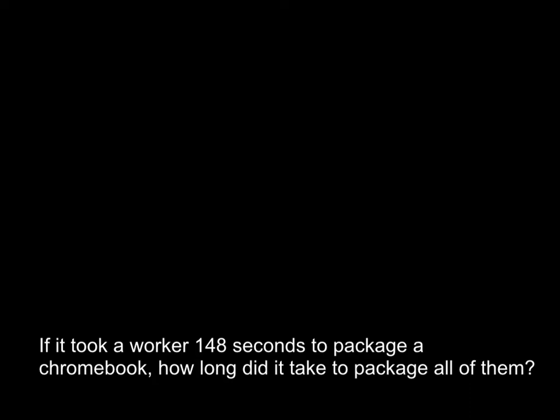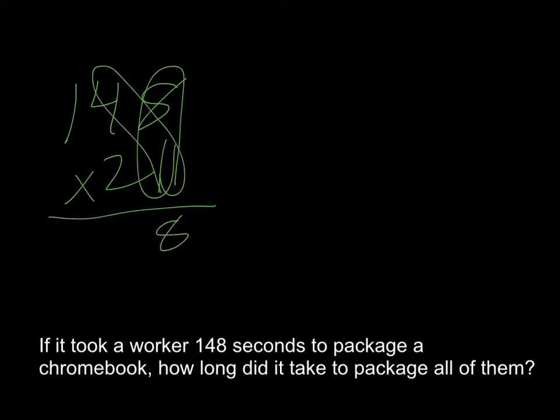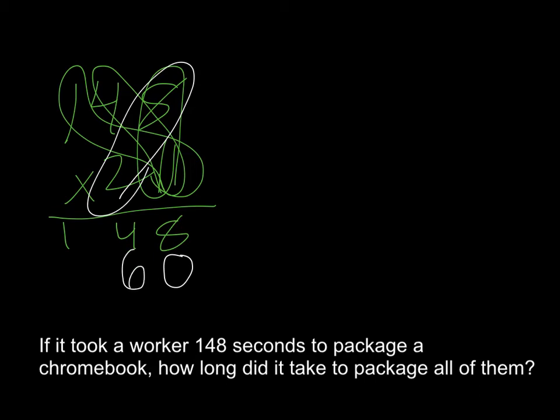All right. Hopefully you have solved it. So I'll set it up traditionally here. 148 times 21. 1 times 8 is 8, 1 times 4 is 4, 1 times 1 is 1. Now, remember, when we move over to this 2, we're actually now multiplying by 20. So we have a 0 there to help us out. We do 2 times 8, which is 16. Put down the 1, carry up the 6, or put down the 6, carry up the 1. 4 times 2 is 8, plus 1 would be 9. And then 2 times 1 is 2.